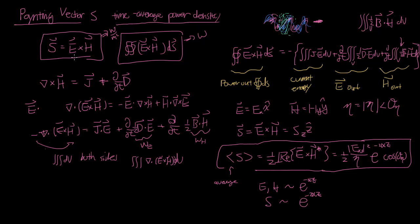To review: we introduced the Poynting vector, which tells you the power density at any point due to a propagating electromagnetic field, calculated by taking E cross H. The surface integral of that quantity over a closed surface tells you how much power flows out of that volume in watts. The power out of a closed surface has three components: power flow due to current, due to the electric field, and due to the magnetic field. And if you're working with phasors, the time average power flow is found by taking one half the real part of E cross H conjugate.